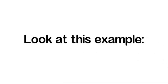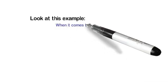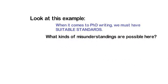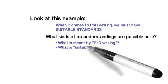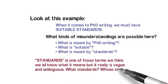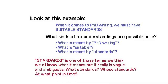Let's look at another example. 'When it comes to PhD writing, we must have suitable standards.' This looks like a fairly concrete sentence, but it's still quite vague. What is meant by 'PhD writing'? What is meant by 'suitable'? What is meant by 'standards'? Standards is a good example of an abstract concept that needs to be explained in concrete terms. We think we all know what it means, but it's quite vague and ambiguous — it depends on who's talking about it, what standards they're talking about, whose standards, and at what point in time.